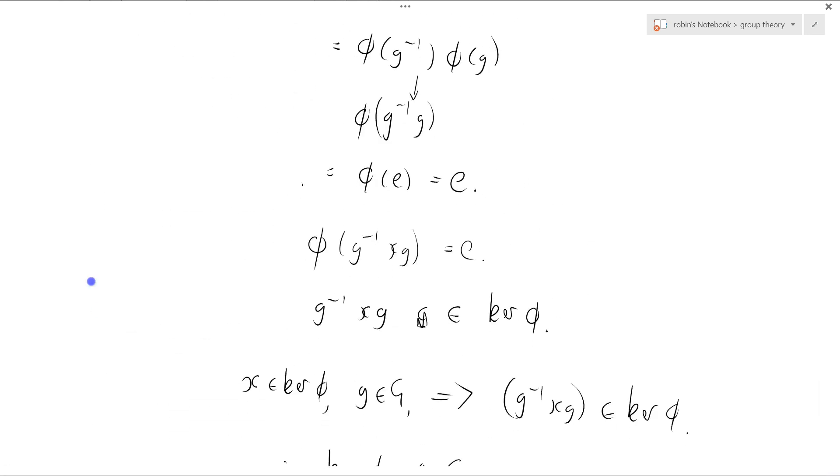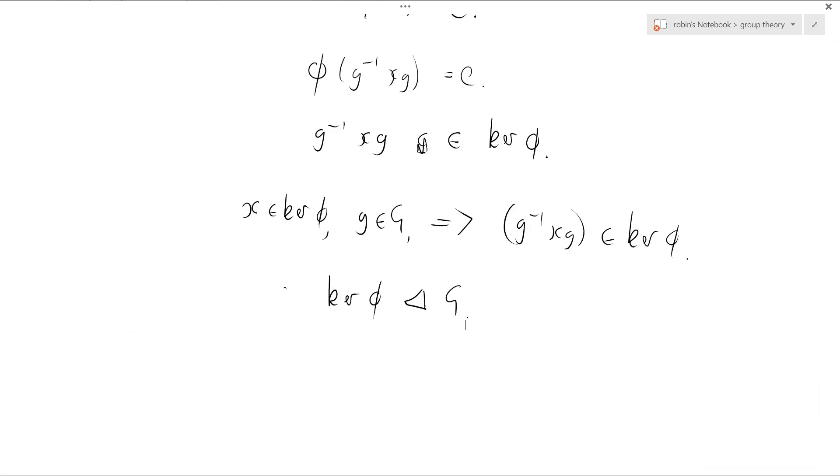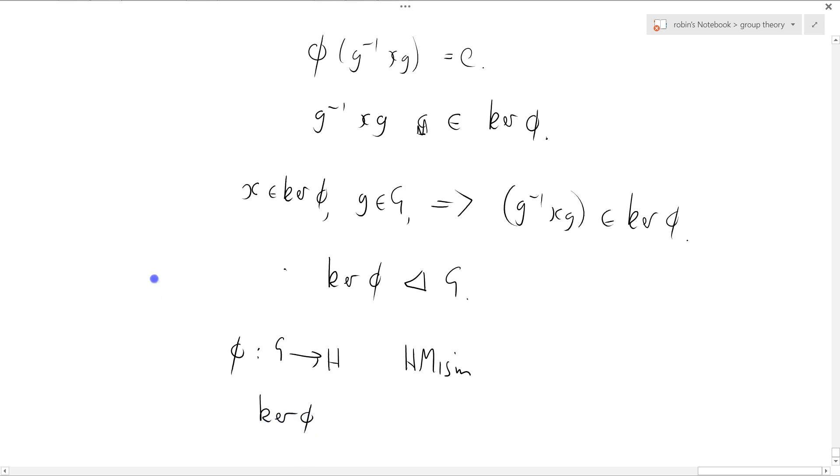And I've got this beautiful result that if phi is a map from G to H, which is a homomorphism, then the kernel of phi, the set of elements which map to the identity, is a normal subgroup of G.